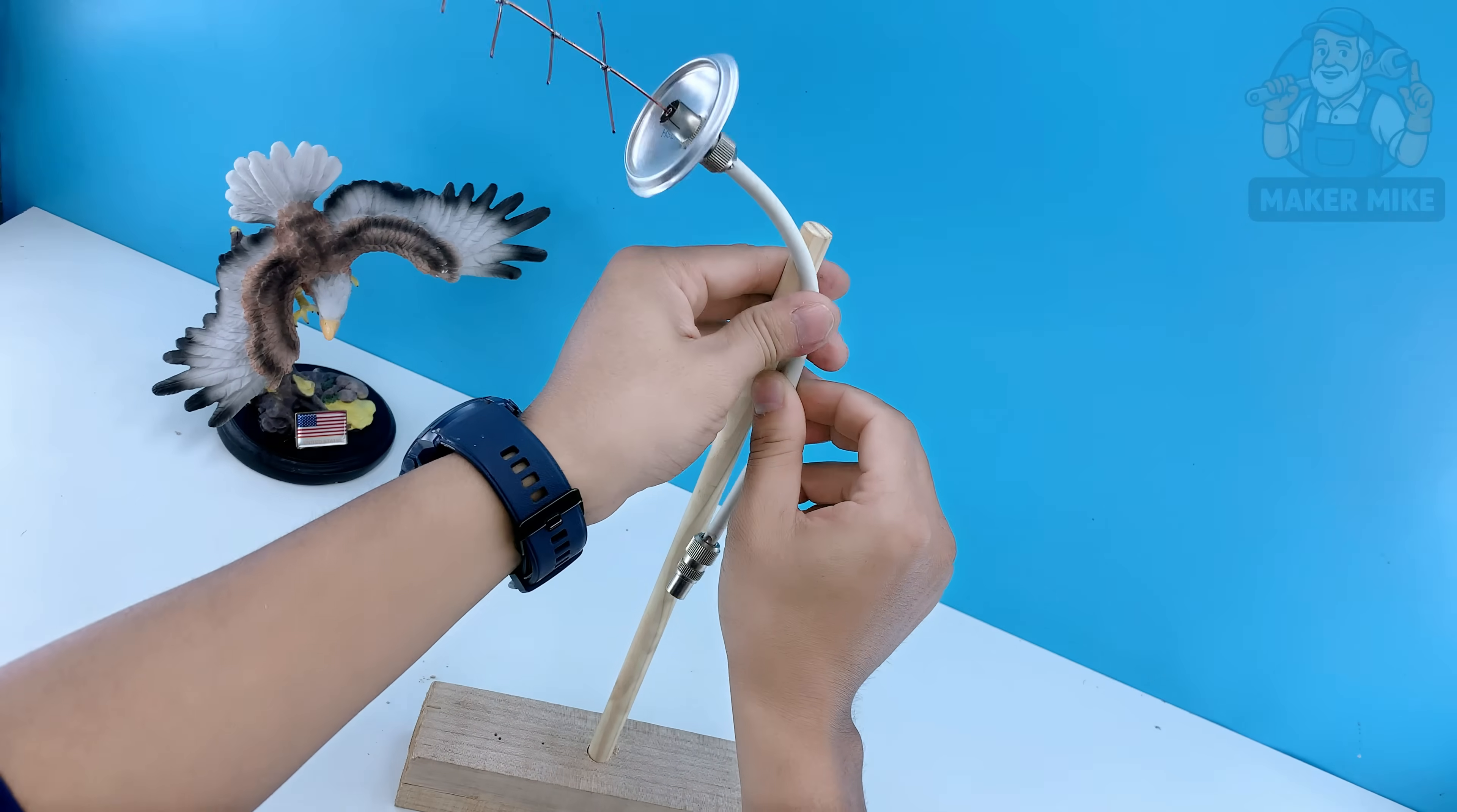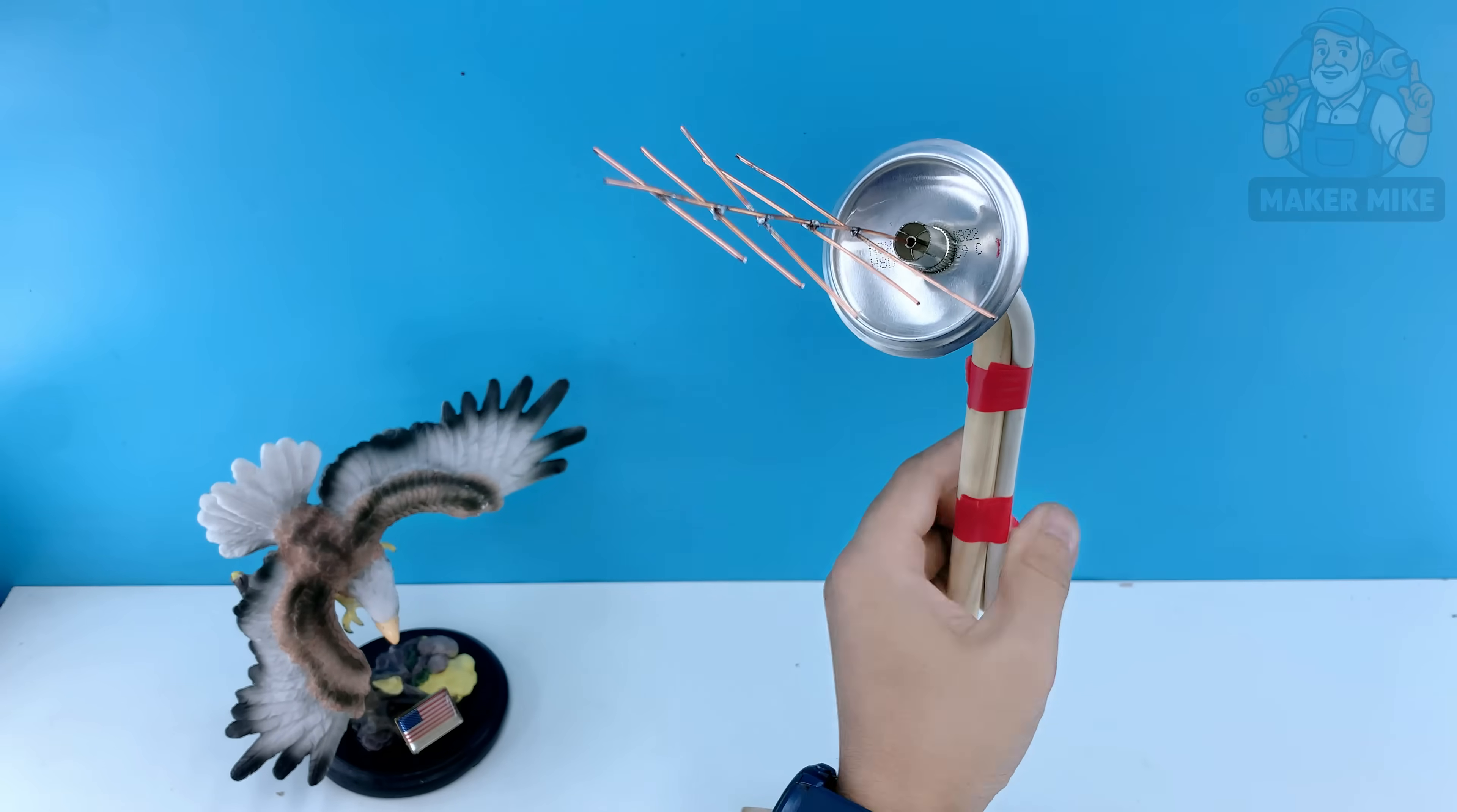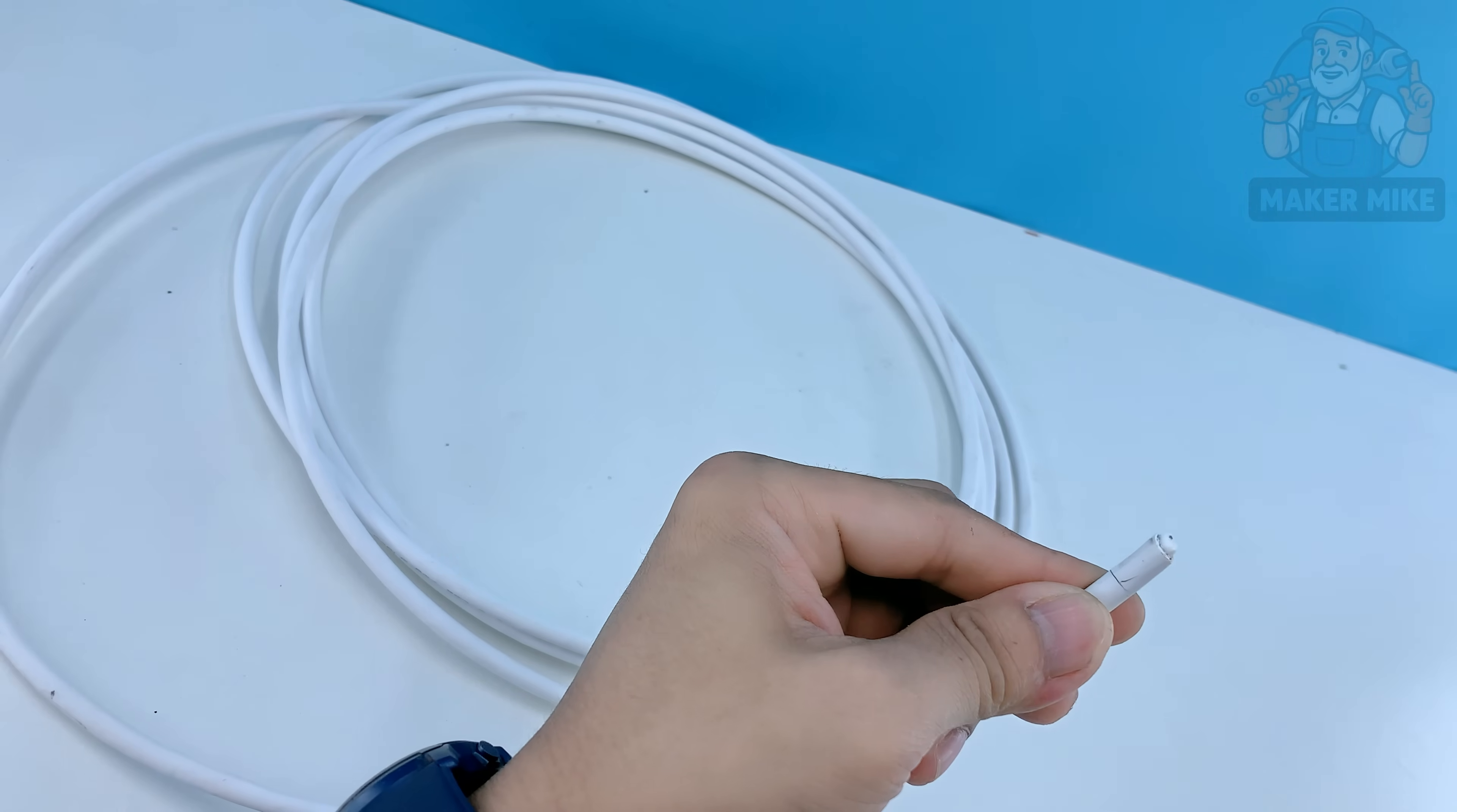Now that the antenna itself is ready, let's make sure it can reach your TV. No one likes a short cable that limits where you can set things up. So we'll build an extension using a regular coaxial cable. Start by cutting a length of coax that's long enough to comfortably reach from your antenna stand to the back of your television. Give yourself some extra slack. It's always better to have too much than too little when it comes to wiring.